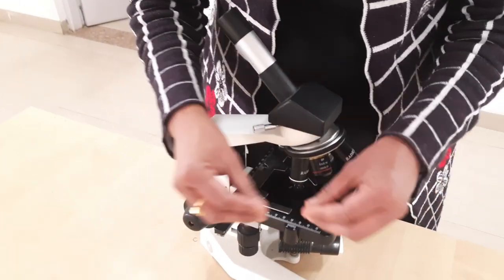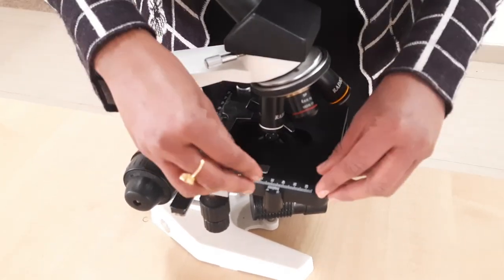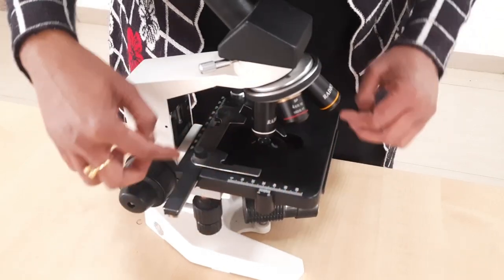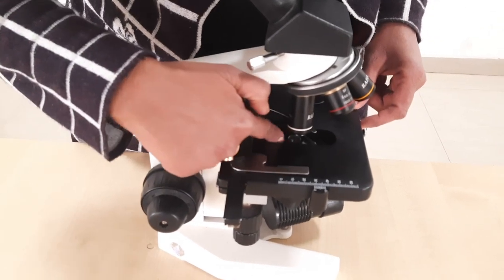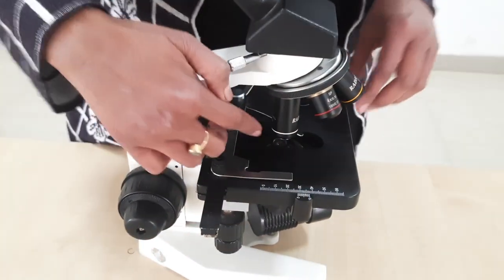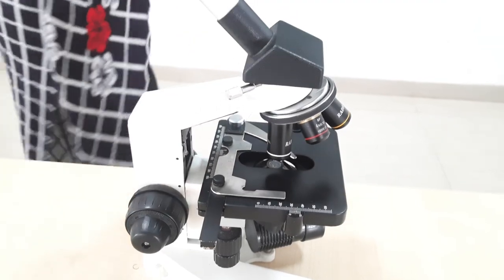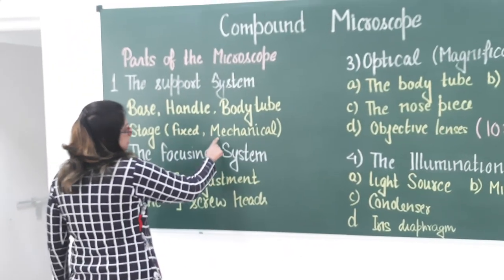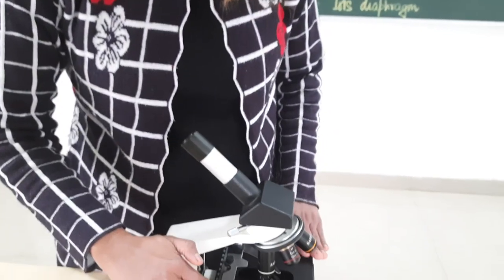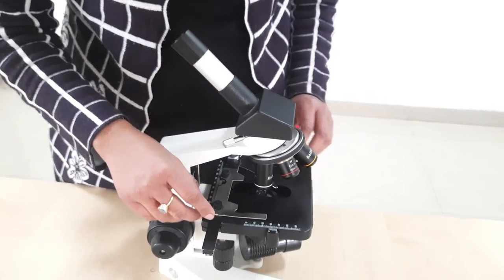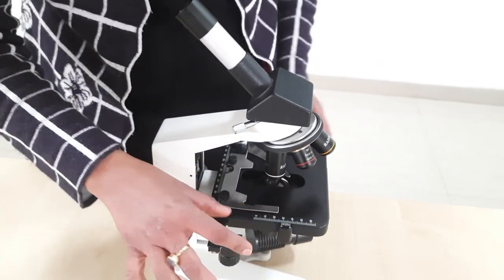The next part of the support system is the stage. In older microscopes there was a fixed quadrangular plate with an aperture in the center, and a separate mechanical stage. In this newer microscope, even the lower fixed stage is capable of moving.